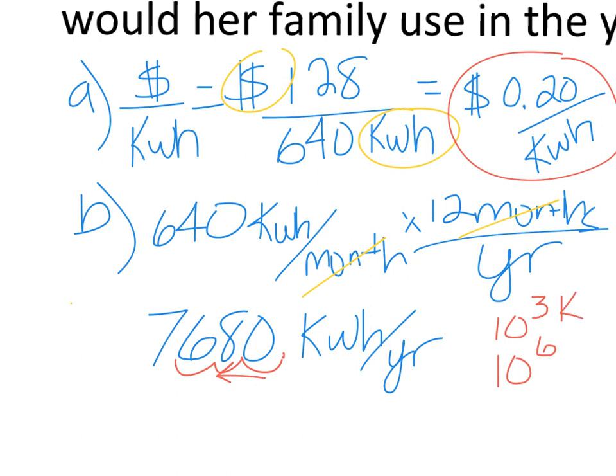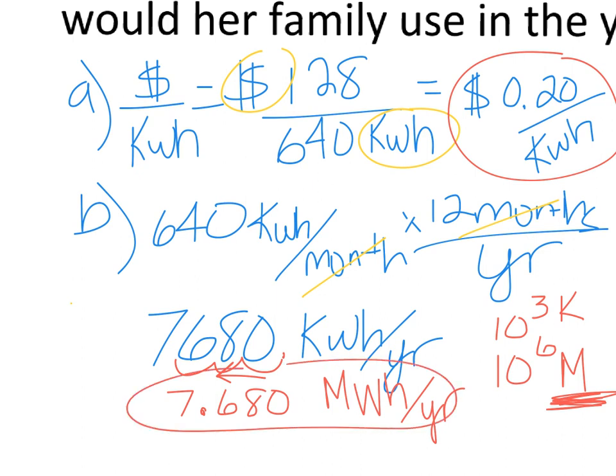Now, why did I move it to the left instead of the right? Well, kilo is 10 to the third, mega is 10 to the sixth. So mega is bigger, and I need a bigger unit. I need megawatt hours per year. So because I'm going to a bigger unit, I need to make a smaller number. And so when I go to the left, I end up with a smaller number: 7.68 megawatt hours per year.